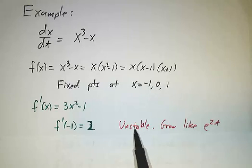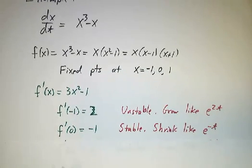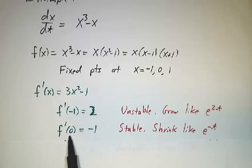So near x = -1, y grows like e^(2t). Near x = 0, the derivative is -1. That's stable. y goes as e^(-t).